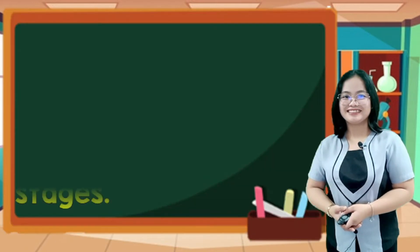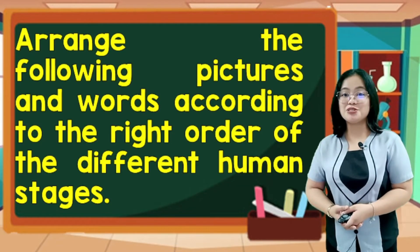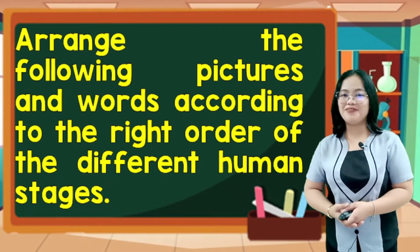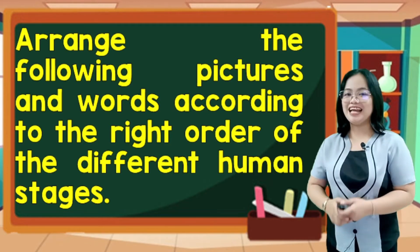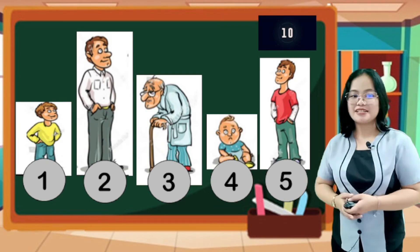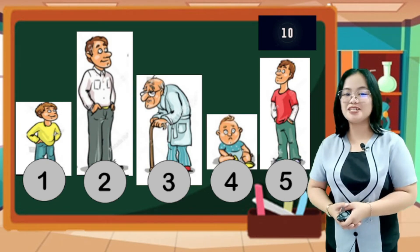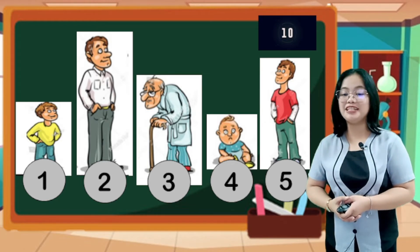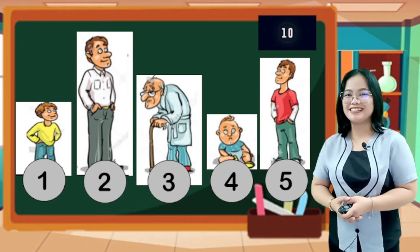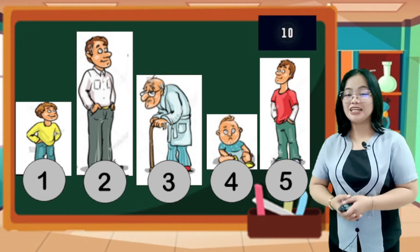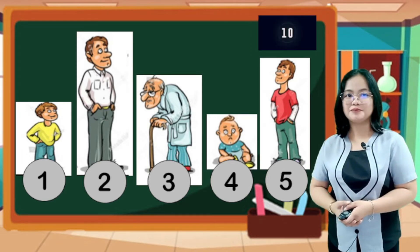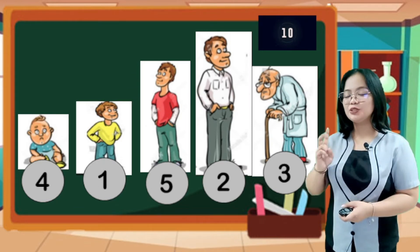Learning check! Let's arrange the following pictures according to the right order of the different human stages. Just comment your answer below. Are you ready? Then let us begin. You have 10 seconds to observe the set of pictures carefully and type the correct arrangement for the different life stages. Timer starts now. The correct arrangement is number 4, 1, 2, and 3.